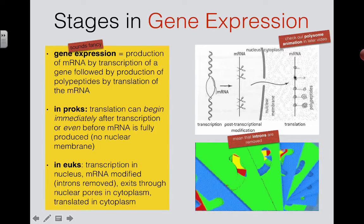The final modified mRNA goes out and attaches to different ribosomes. Each ribosome reads this code and makes the exact same polypeptide. You can see that some ribosomes are almost done while others have just started, but the chain of amino acids coming out is starting to fold into specific two-dimensional and three-dimensional shapes depending on which amino acids were coded for.